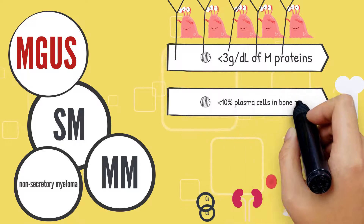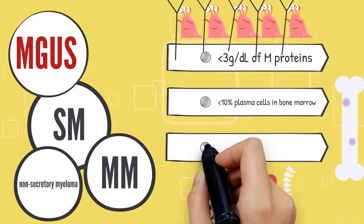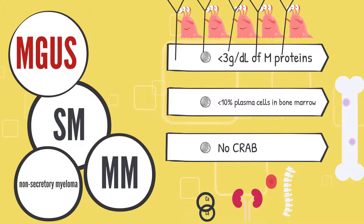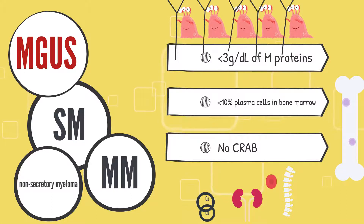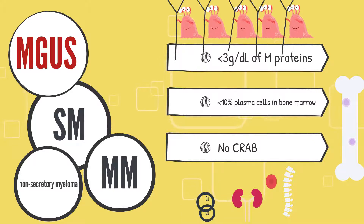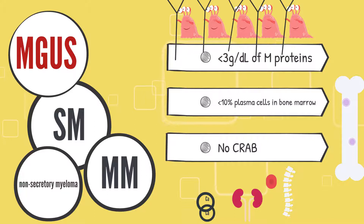Let's start off with MGUS. MGUS is defined by the following criteria: first, less than 3 grams per deciliter of M-proteins; next, less than 10% of plasma cells in the bone marrow; and third, no features of end-organ damage — that is, no evidence of hypercalcemia, renal impairment, anemia, or bone lesions.